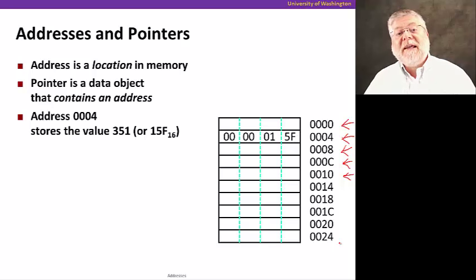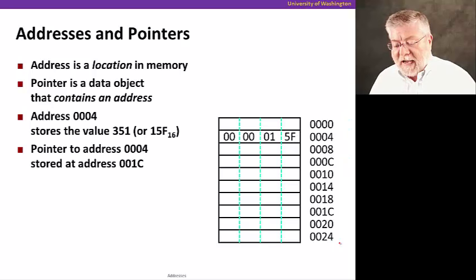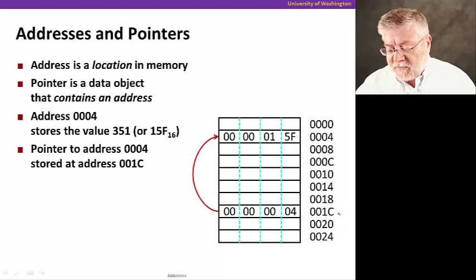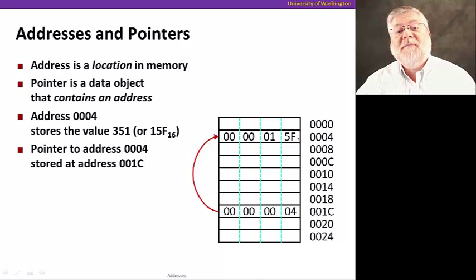A pointer, unlike an address, is a data object that contains an address. So let me give you an example. I can put a pointer to that address of 0004 at a different memory location, let's say at the address 001C. So now you'll see that what I've shown in the memory is that at that location 001C, I have a value that happens to be the address of another location in memory.